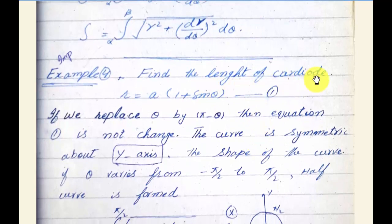We will see this example to understand. Example: Find the length of the cardioid r = a(1 + sin θ). If we replace θ by π - θ, equation 1 is not changed. The curve is symmetric about the y-axis.